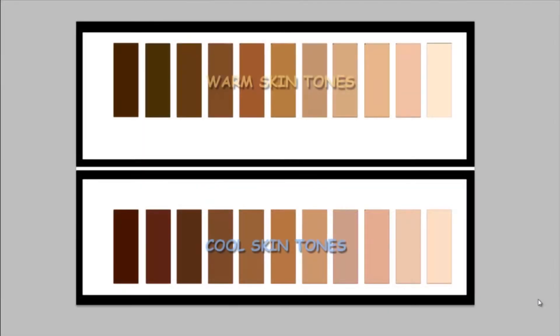Just like we have the warm and the cool colors for the natural colors of things, we also have a warm and a cool skin tone. If you look at the warm skin tones, they have a natural yellow in the background of the color. It looks real warm — it gives it a golden type hue.